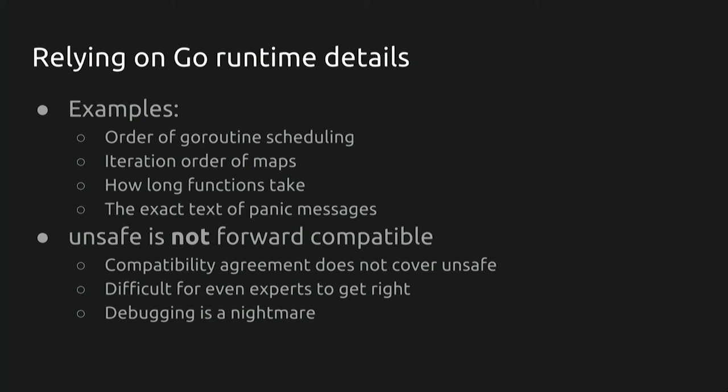One important detail about the runtime to mention is that 'unsafe' is not forward compatible. The compatibility agreement actually reserves the right for the toolchain to make breaking changes. We understand that use of unsafe is absolutely necessary in some applications, so we try very hard to avoid breaking unsafe code unnecessarily. But users of unsafe must be willing to update their code, if necessary, for future releases. Build tags can be used to isolate behavior that exists in one release of Go and not in another.